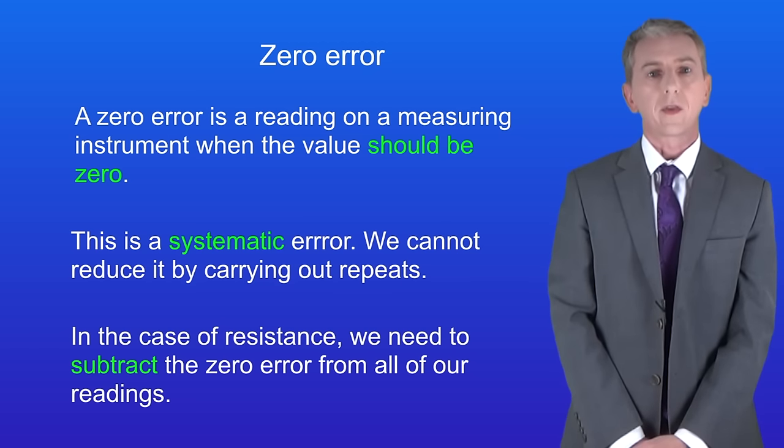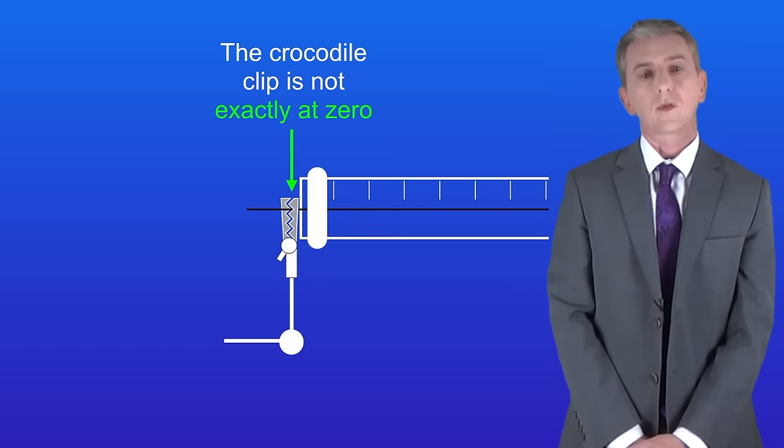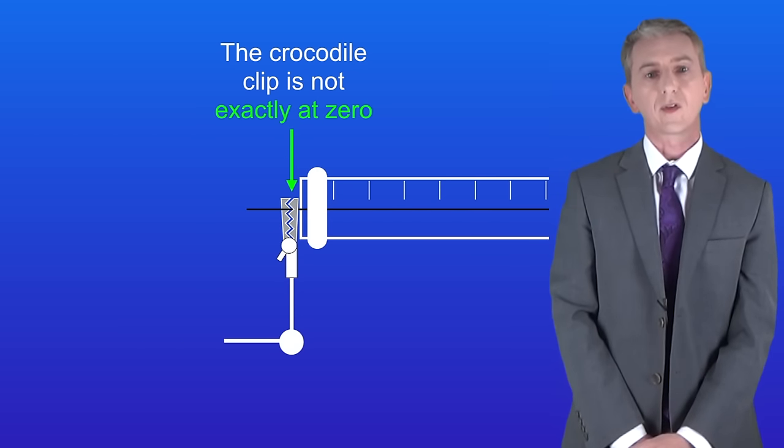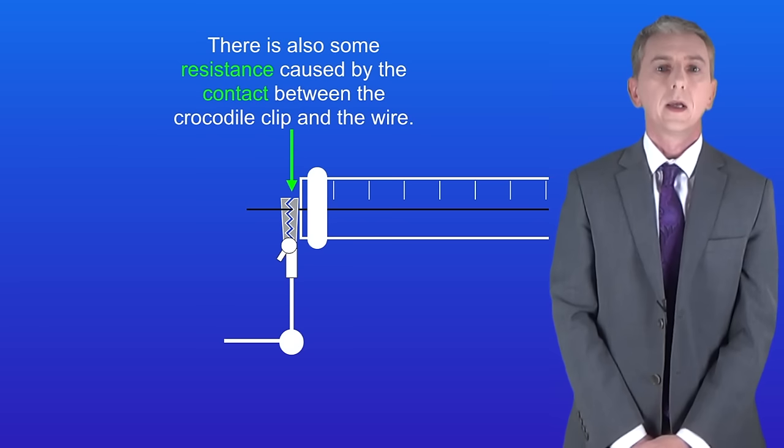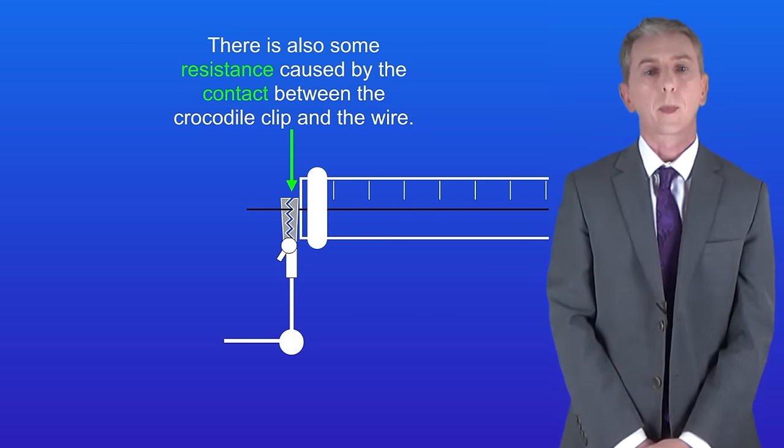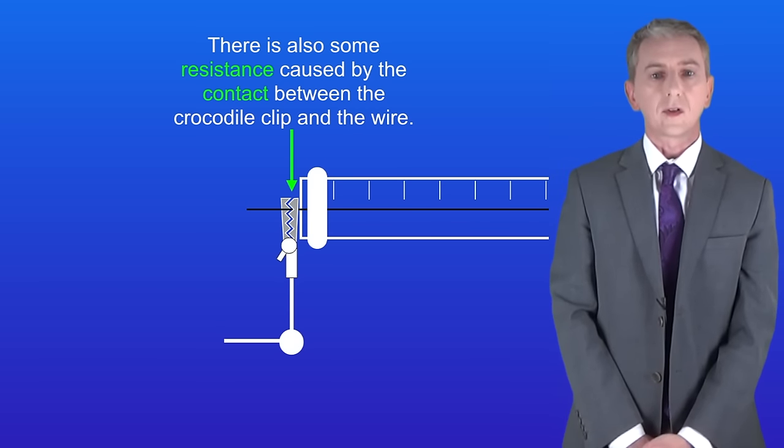Now this zero error is caused by the equipment. If we take a closer look at the crocodile clips, we can see that it's extremely difficult to get the crocodile clip at the zero position on the ruler. Secondly, there's also some resistance caused by the contact between the crocodile clip and the wire, and there's nothing we can do about that. Again, this causes zero error.